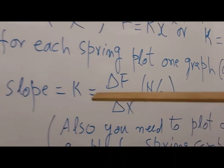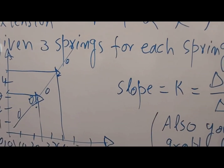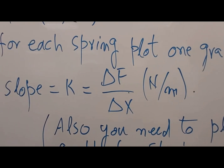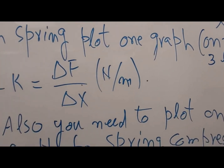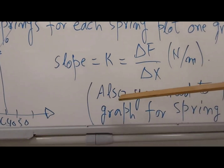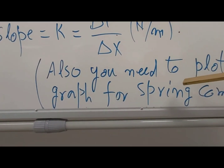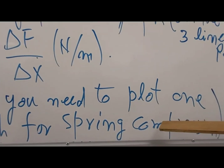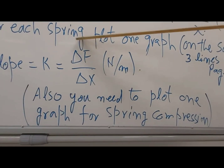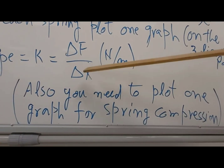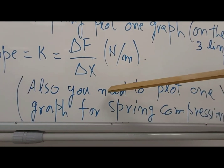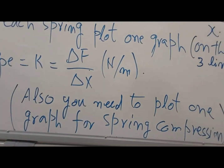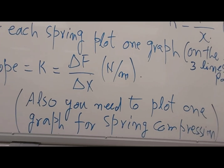The slope will give you k, equal to delta F over delta x in Newtons per meter. There is another part: you will compress a hard spring and find its spring constant the same way — slope equals delta F over delta x. We will give you the data and you plot the graph. Plot the compression graph on a separate graph paper from the extension graphs.